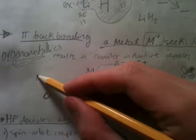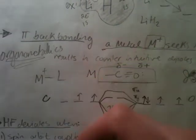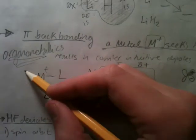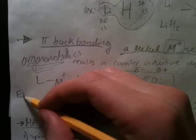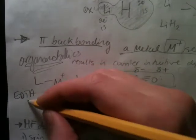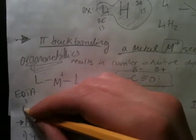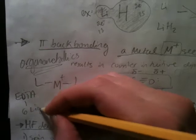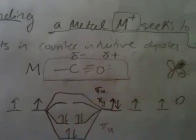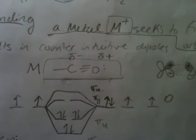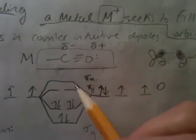Pi backbonding is when metals seek to fill d orbitals. When metals bond, they bind to ligands. A really common example would be EDTA, which can bind to six ligands. Now, when a metal binds to a ligand, a common ligand is, for example, CO. This is what the structure looks like when a metal binds to CO.